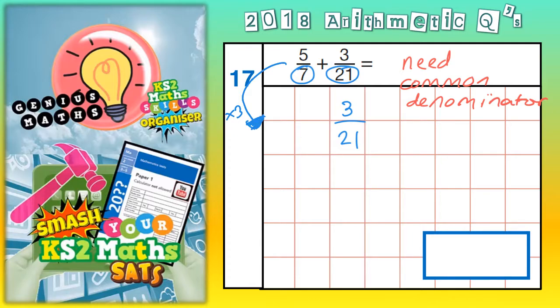If you multiply the 7 by 3 you're going to get 21, and then your denominators will both be 21. But whatever you do to the bottom you must do to the top. So 5 times 3 is 15. So we are dealing with 15/21 plus 3/21.